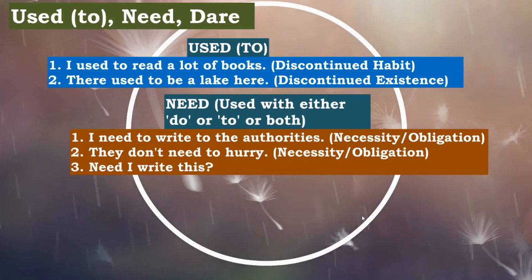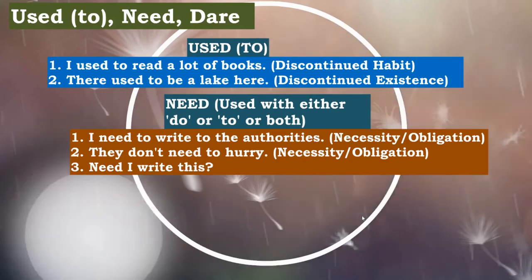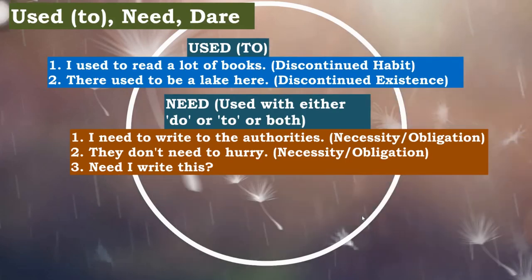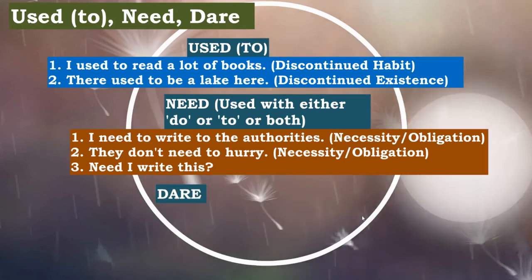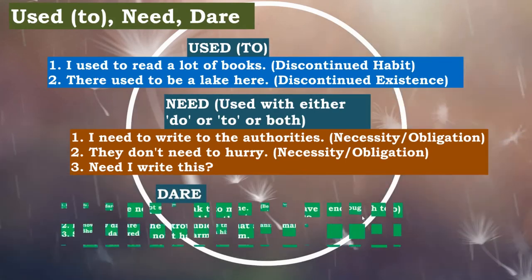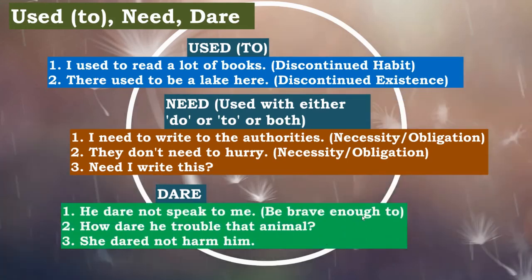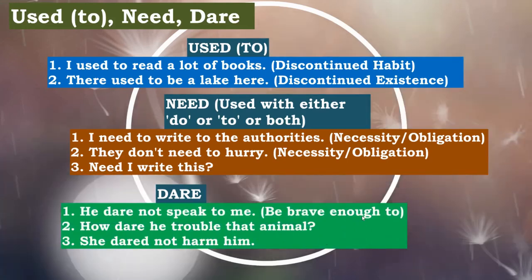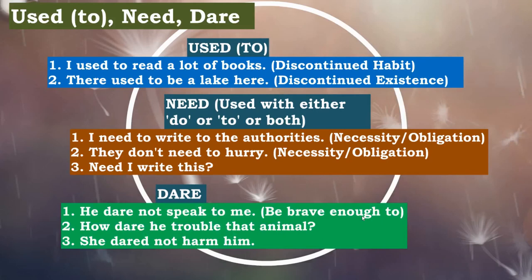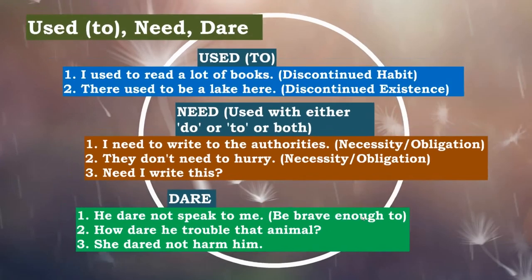The last modal auxiliary is 'dare', meaning to be brave enough to do something. 'He dare not speak to me' — he is not brave enough to speak to me. 'How dare he trouble that animal?' — how can he be so bold? 'She dare not harm him.' So 'dare' is used to express whether someone is brave enough to do something.